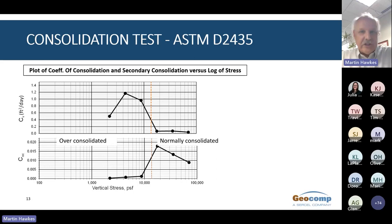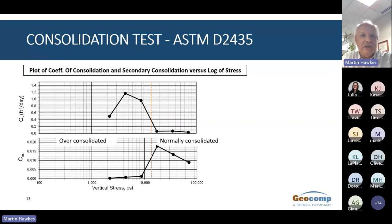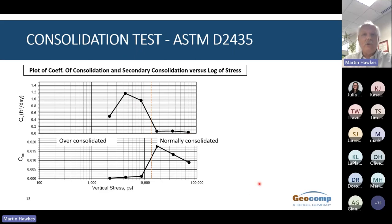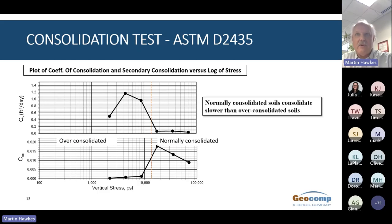This plot shows the change in coefficient of consolidation and secondary compression versus log of stress for six different loading steps ranging from the over-consolidated to the normally consolidated range. Note that CV is not a constant and shows a large increase when going from over-consolidated to normally consolidated. CV is higher for over-consolidated and smaller for normally consolidated soils. The plot also shows a large increase in creep, or C-alpha, when going from over-consolidated to normally consolidated. Normally consolidated soils will have far greater creep rates than over-consolidated soils.